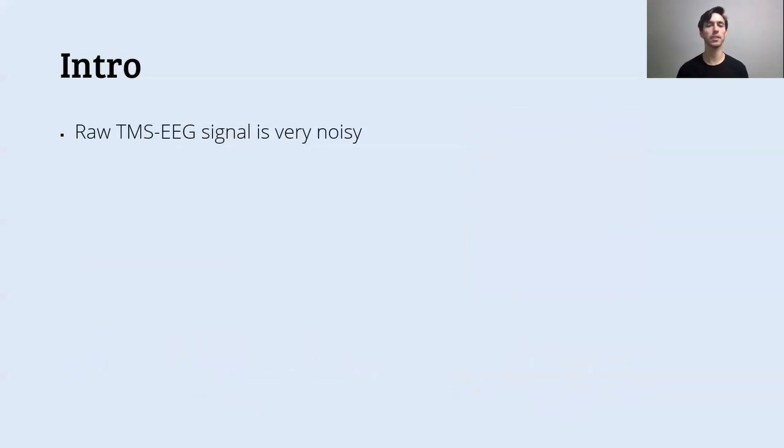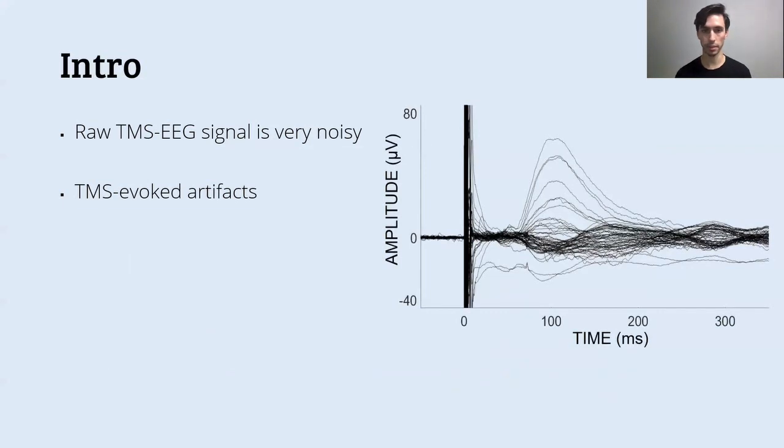However, raw TMS EEG signal is very noisy. This is due to the fact that the TMS pulse interacts with the sensitive EEG recording causing TMS-evoked artifacts that you can see in this raw TMS EEG signal. You can see that around zero there is this huge TMS-evoked artifact, which is the pulse artifact, which actually goes up to some millivolts, and also later the decay artifacts, muscular artifacts, the TMS-evoked ocular artifacts, and all other artifacts that impair the use of the raw TMS EEG signal.